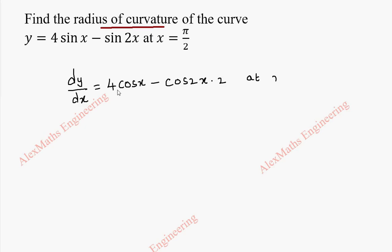And we have to find its value at x equal to pi by 2. So when we substitute pi by 2, 4 cos pi by 2 minus cos 2 into pi by 2 and the whole thing, separately we have 2 outside. So we can cancel these 2.